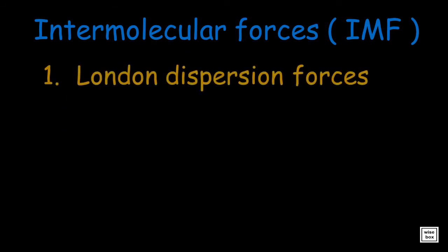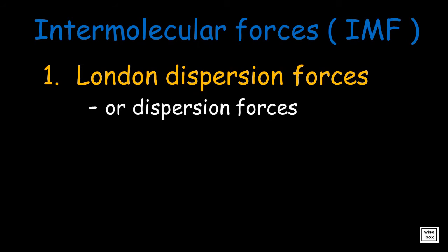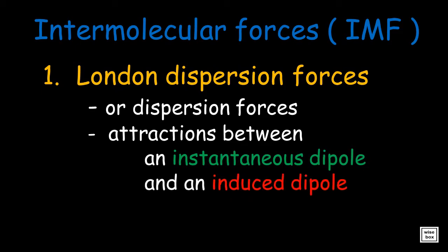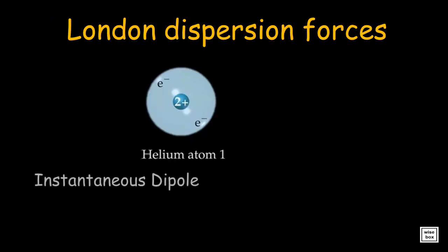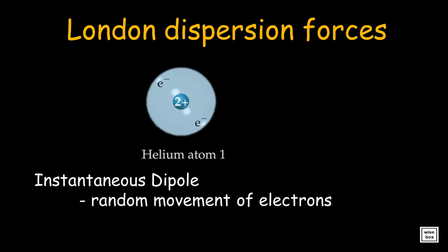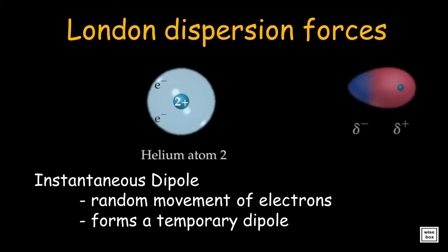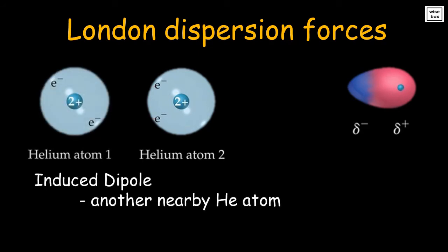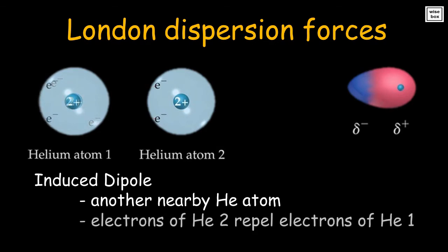London dispersion forces, or simply dispersion forces, are attractions between an instantaneous dipole and an induced dipole. In an instant, a temporary dipole forms — at that instant the helium atom becomes polar, with an excess of electrons on the left side and a shortage on the right side. A nearby helium atom would have a dipole induced in it, as the electrons on the left side of helium atom 2 repel the electrons in the cloud of helium atom 1.